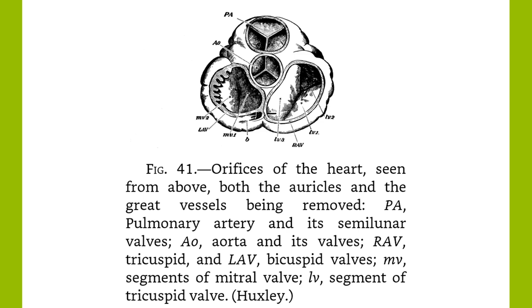At each beat of the heart, from four to six ounces of blood are expelled into the pulmonary artery and the aorta, and in 22 or 23 beats all of the blood in the body passes through the heart. The power exerted by the heart every minute in driving the blood upon its course has been estimated as sufficient to raise its own weight — three-quarters of a pound — to the height of the Washington Monument, or 150 meters, for the ventricles have to force the blood into vessels already full.